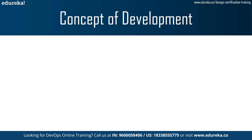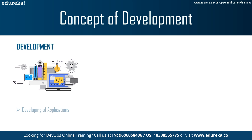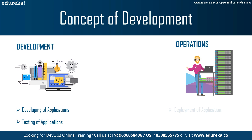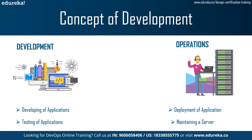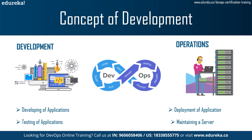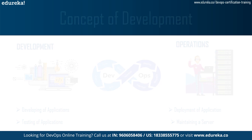First, you need to understand that there are two main parts when creating an application. The development part, where software developers program the application and testing of the application, and the operation part, where the application is deployed and maintained on a server. DevOps is a link between the two. Let's dive into the details to really understand the DevOps tasks and which tools are needed to carry out these tasks.